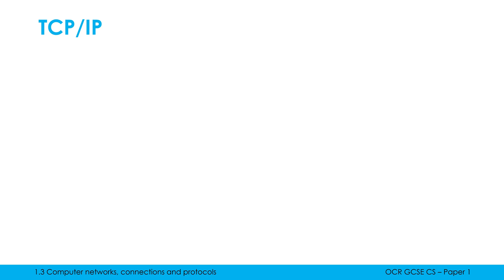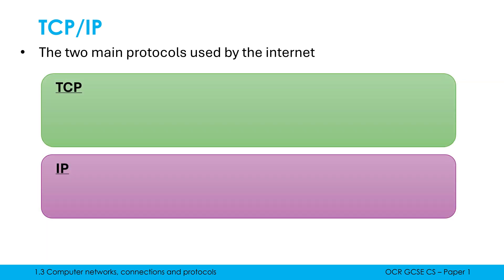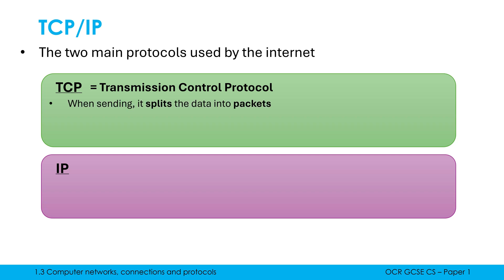The first protocol is kind of a two-in-one: TCP/IP is how this is written. These are the two main protocols used by the internet, but they are two separate protocols. TCP, first of all, stands for Transmission Control Protocol. What it will do when it's sending data is split the data into individual packets.